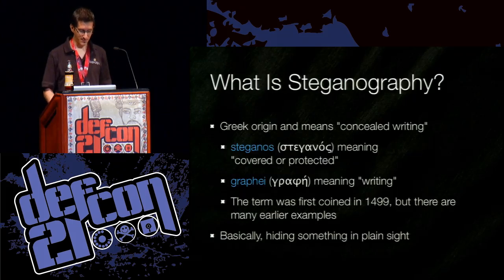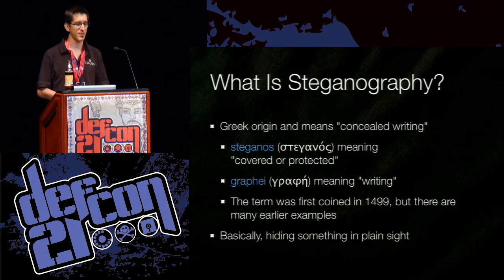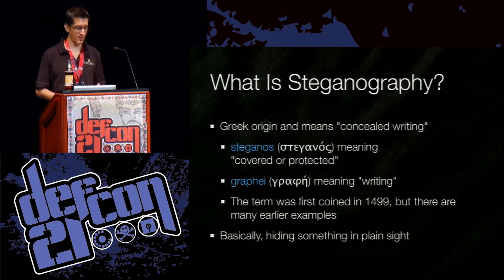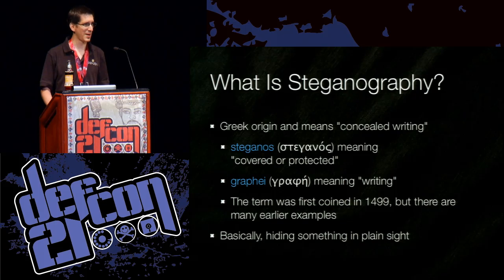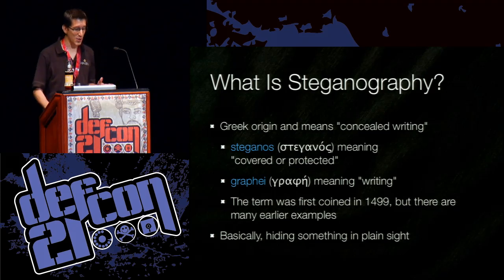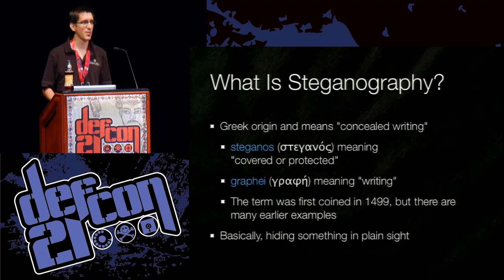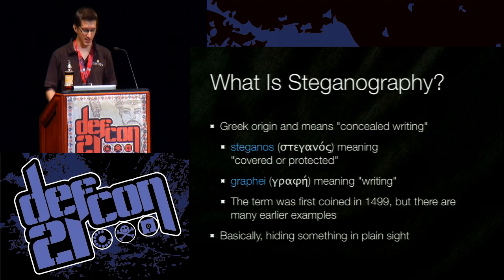So let's get started. What is steganography? The origins of the word are Greek. It means concealed writing. There are two roots of the word: steganos, which means covered or protected, and graphe, which means writing. I apologize if I'm butchering the Greek — I may have Greek roots, but I've never spoken the language. Sorry, Grandma. The term was first coined in 1499, but there are many earlier examples of steganographic techniques used before the word even existed. Basically, it just means hiding something in plain sight.